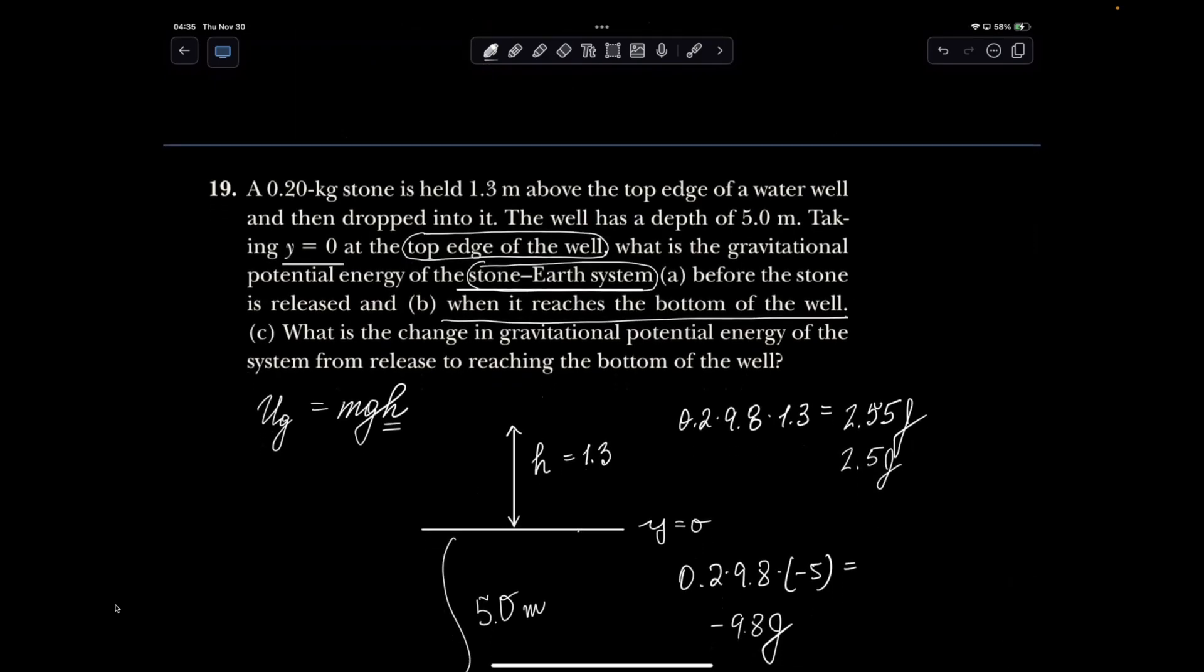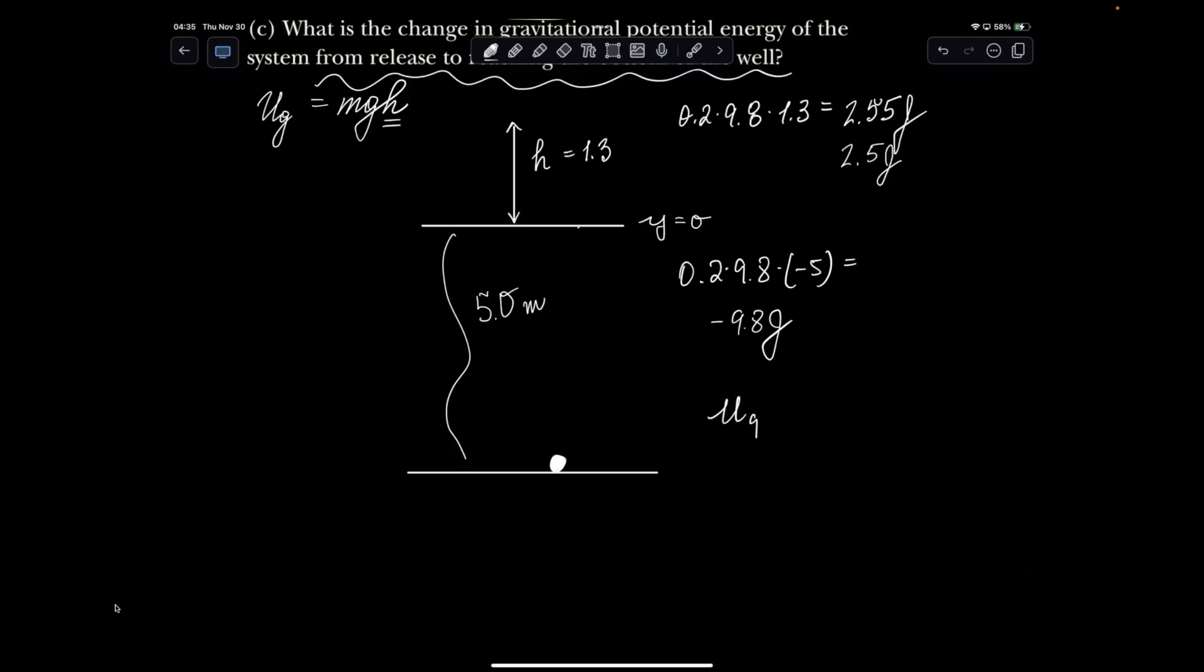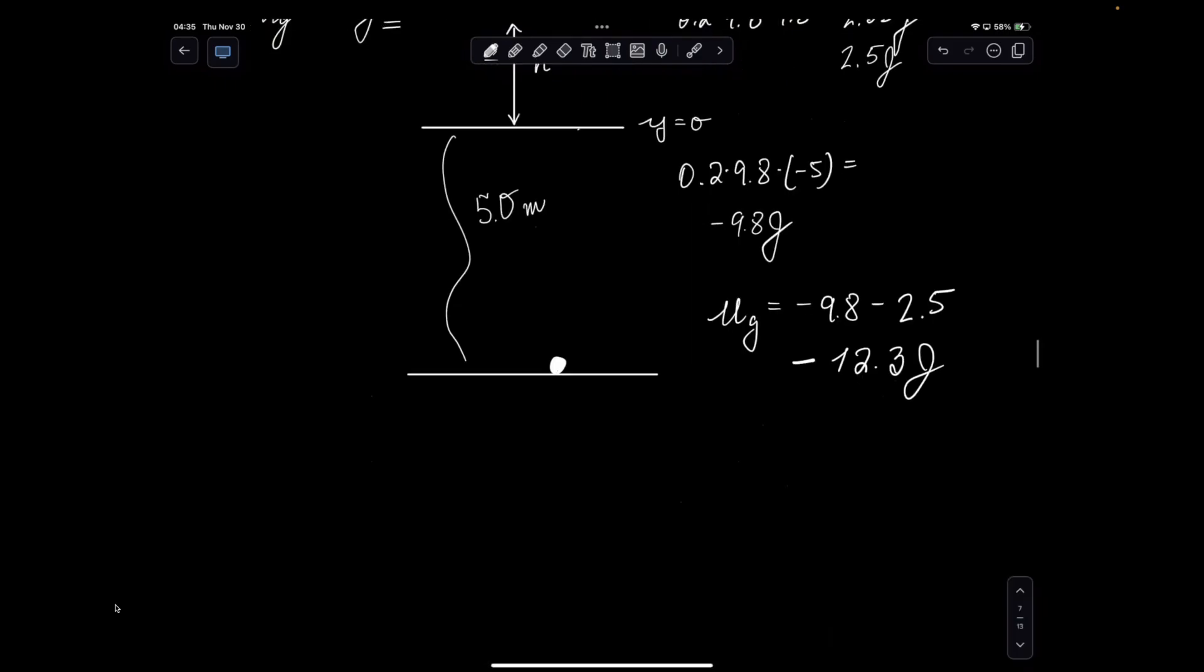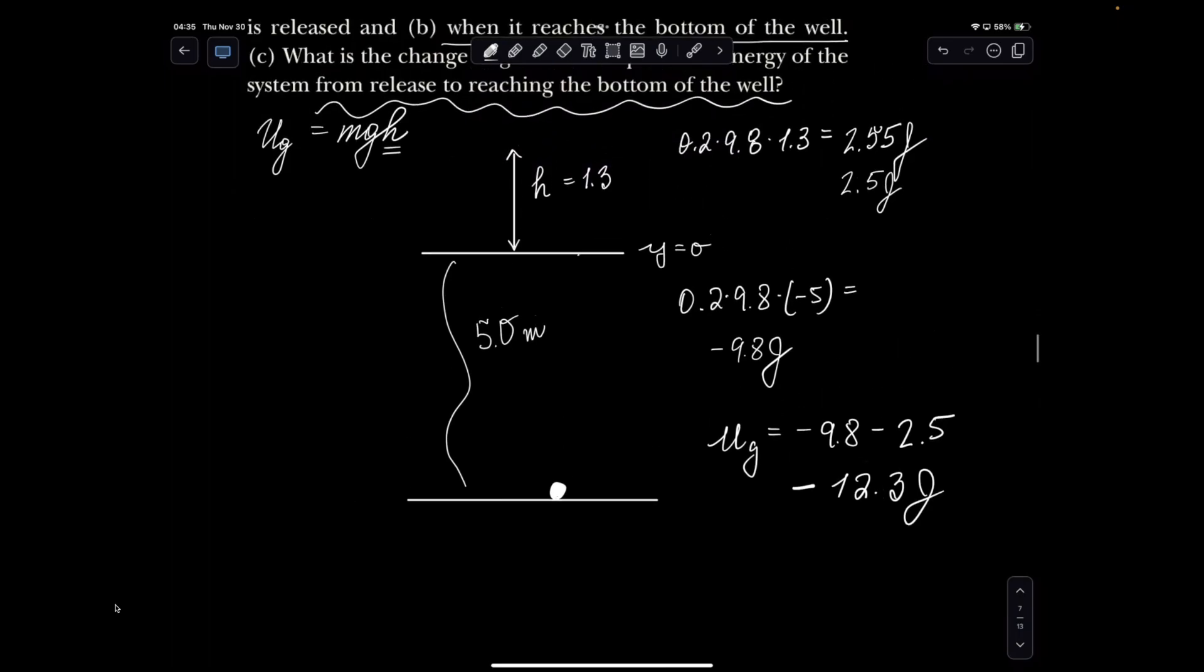What is the change in gravitational potential energy of the system from release to reaching? Final energy is negative 9.8, initial was 2.5, so I'm subtracting it. 9.8 and 2.5, it's going to be 12.3 joules and it's negative. That's how much energy the stone lost by falling from the 1.3 meters above the edge to 5 meters below the edge.